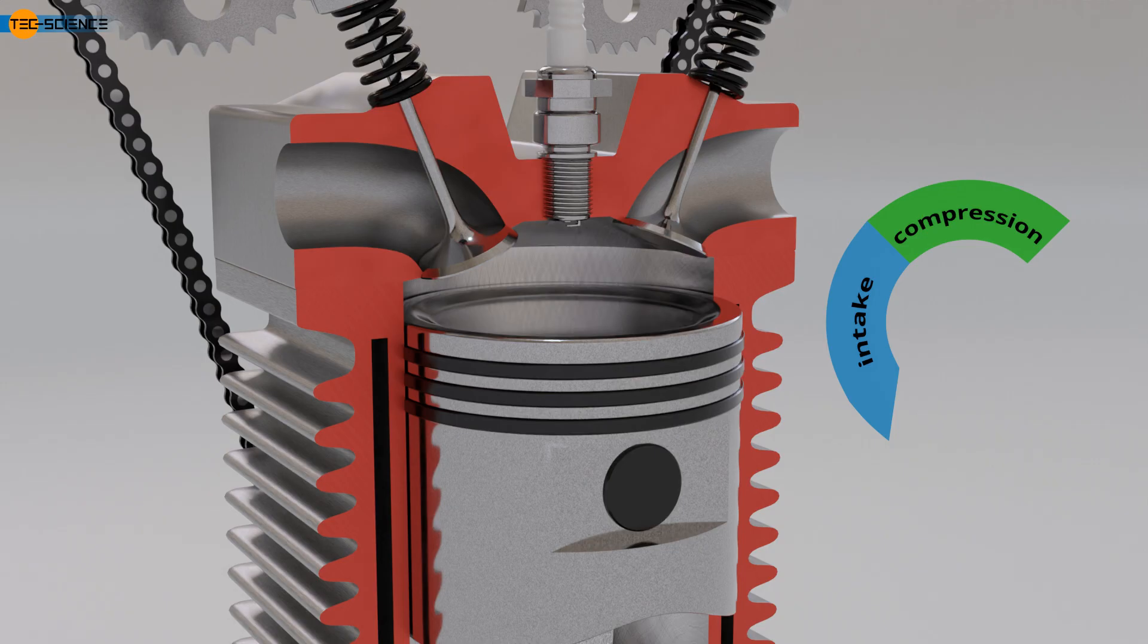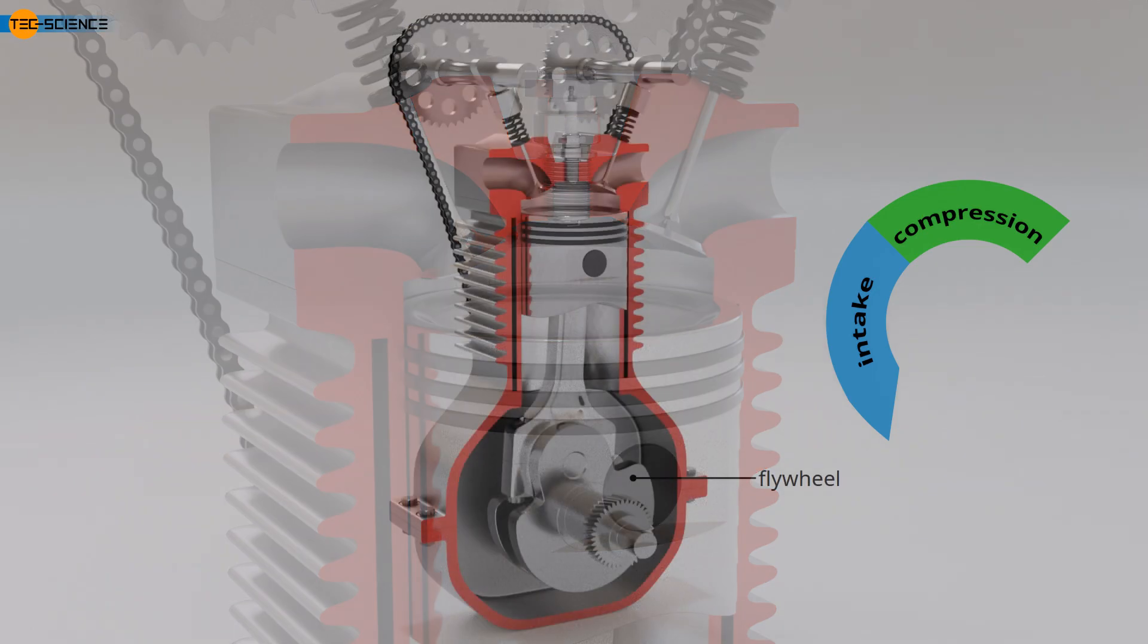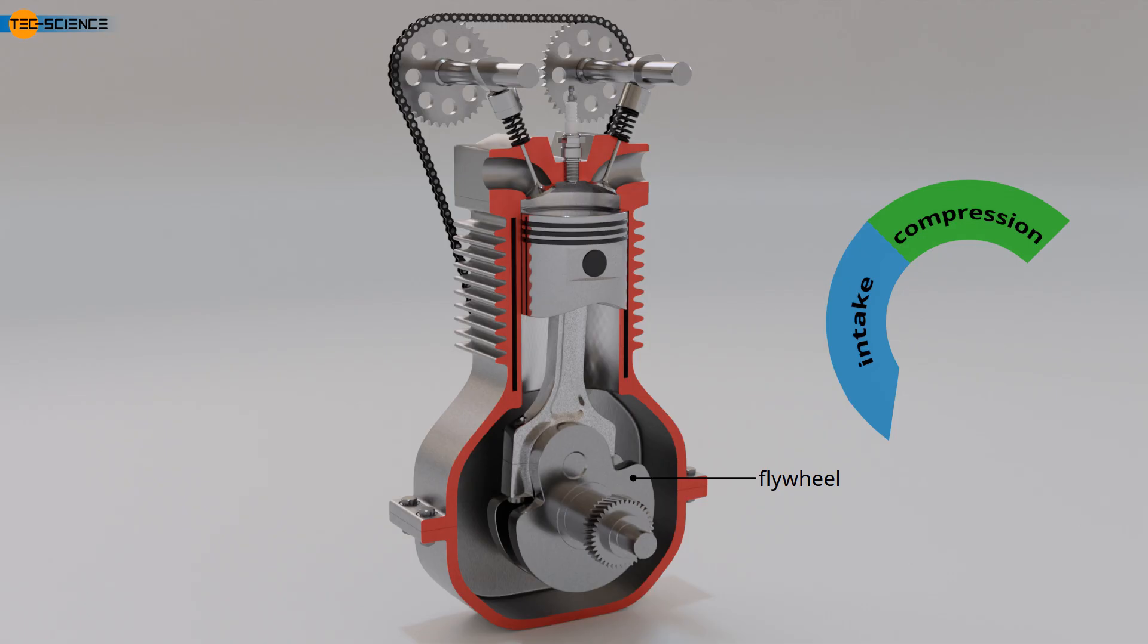Due to the compression of the gases, the temperatures in gasoline engines rise to over 450 degrees Celsius. Diesel engines reach much higher temperatures of over 650 degrees Celsius due to the higher compression ratio. The work required for compression comes from the rotational energy of the flywheels attached to the crankshaft.